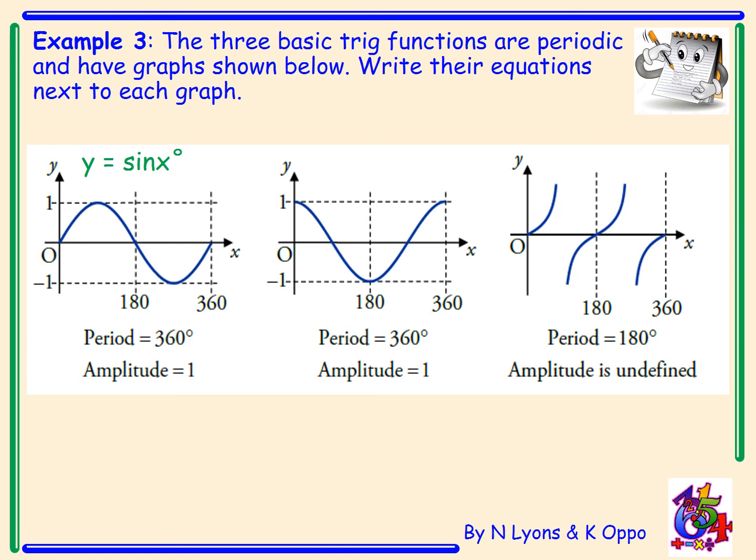The middle graph starts at its maximum, through 0, minimum, 0, and back to its maximum again. And that is the graph of cos(x). And the last graph you should recognise as tan, tan(x).